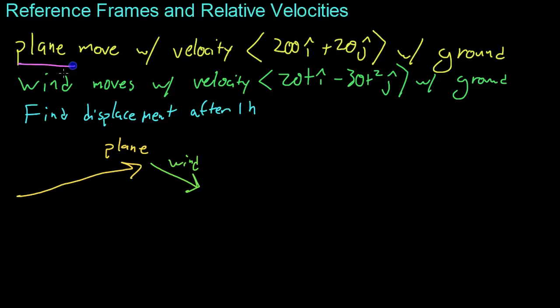In this case, we have a plane and some wind, just as we do with the hypothetical example we previously discussed. The plane moves with velocity vector described here, 200i plus 20j. And the wind moves with a time-dependent velocity vector. You can see the t's in here, 20ti minus 30t squared j. And our objective is to find the plane's displacement after one hour relative to the ground.